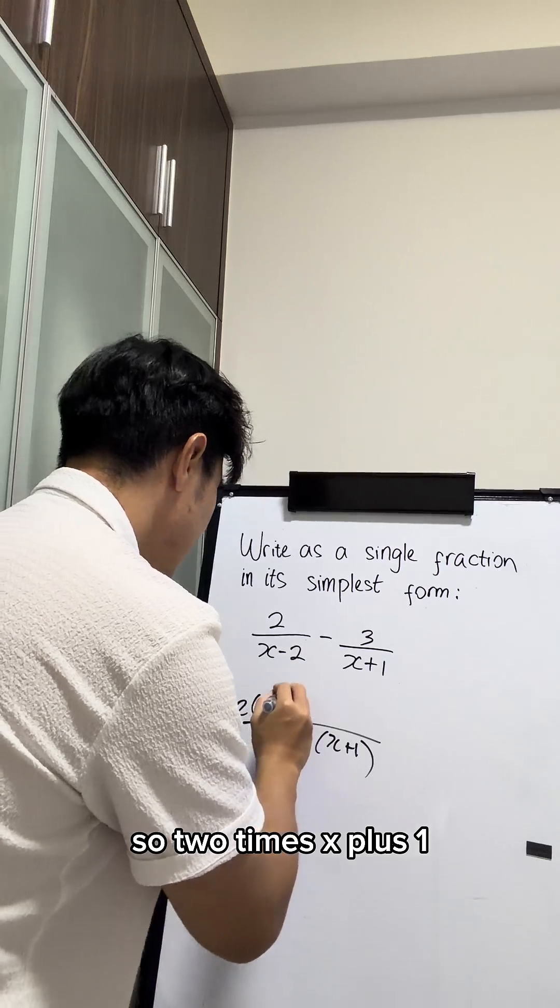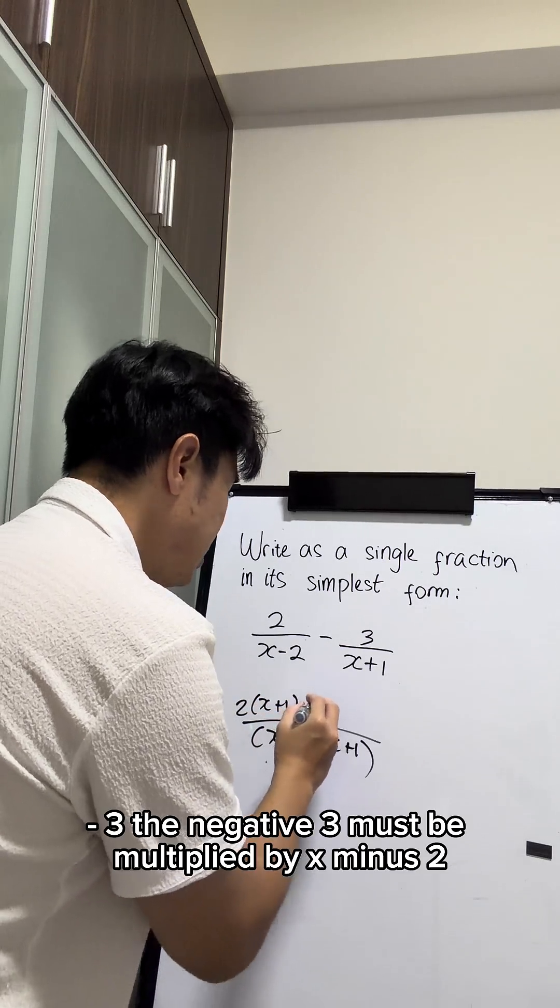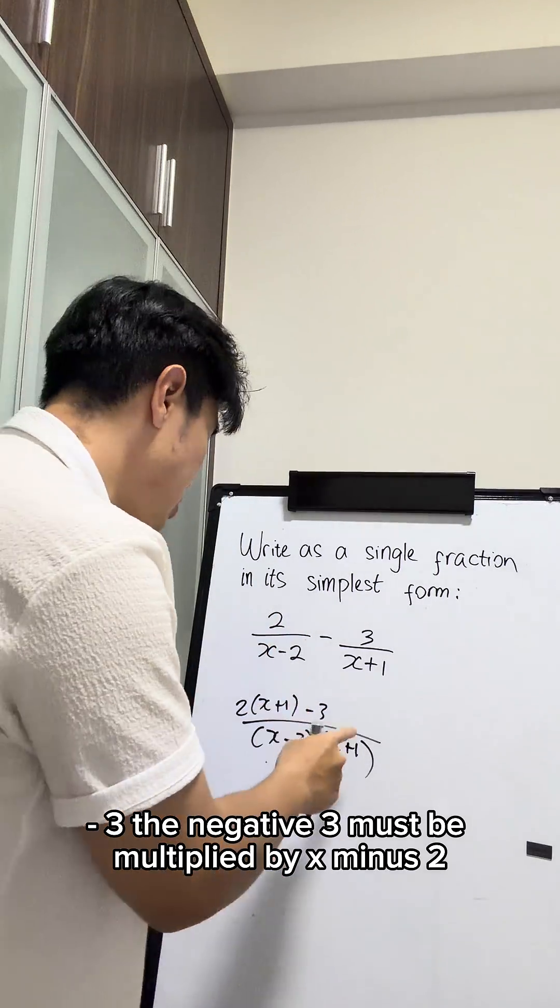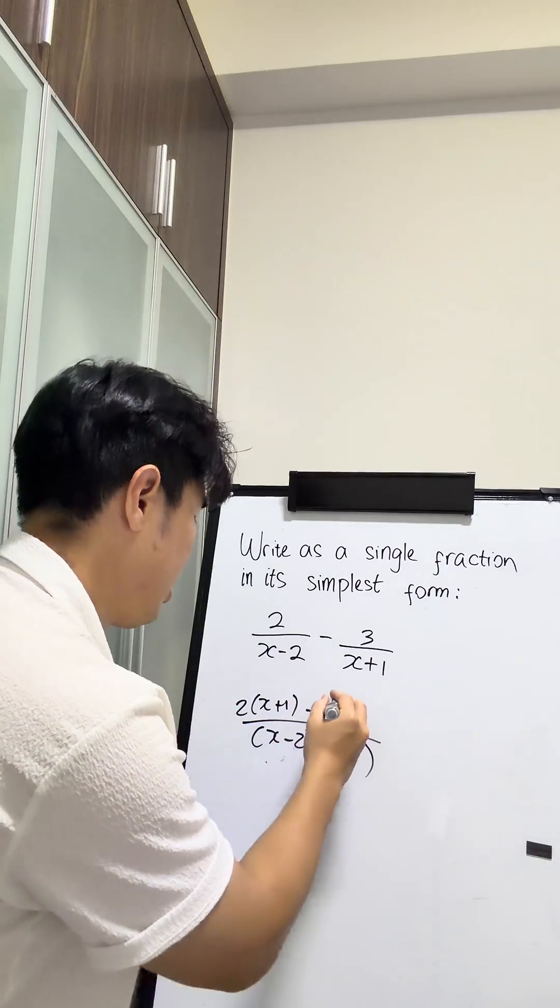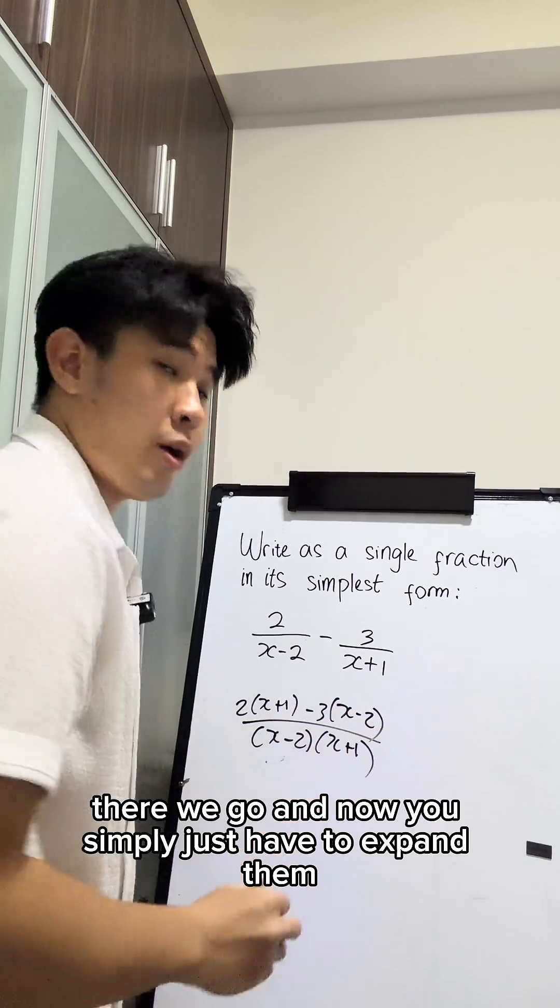So 2 times x plus 1 minus 3. The negative 3 must be multiplied by x minus 2. There we go.